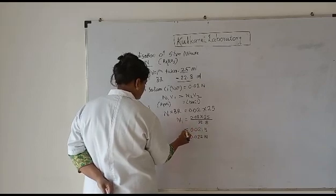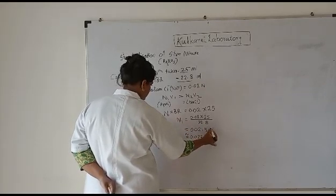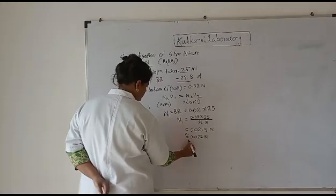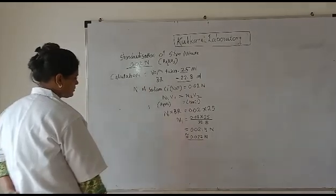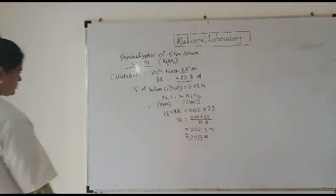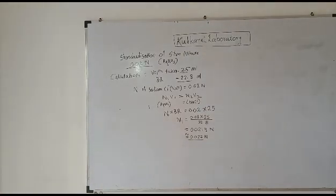The answer is 0.0219 normal, which will be equivalent to 0.022 normal. So this is the normality of silver nitrate, 0.022 normal. This is the calculation of silver nitrate for standardization. Thank you.